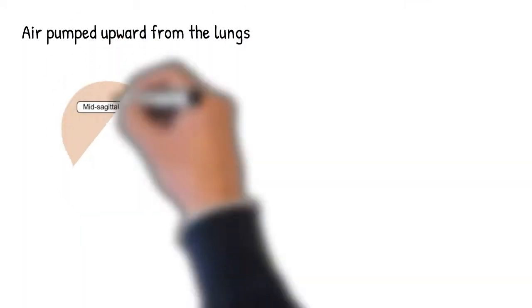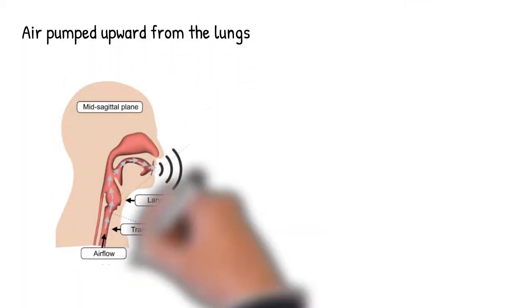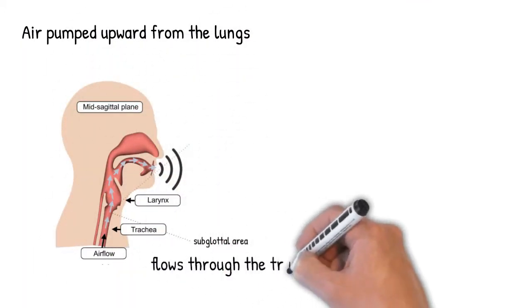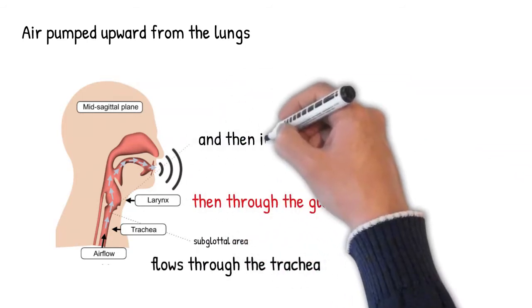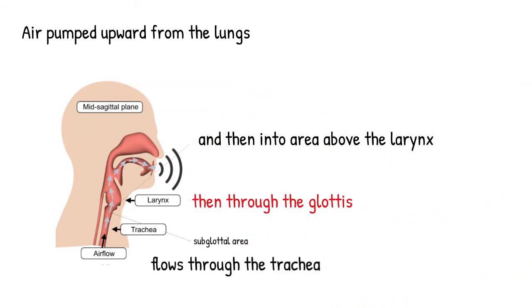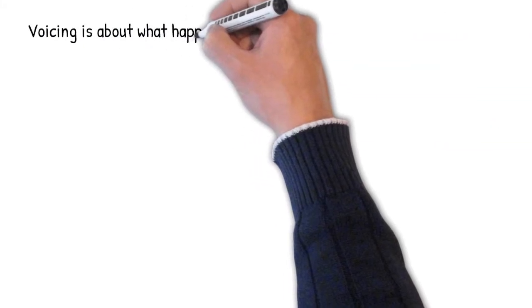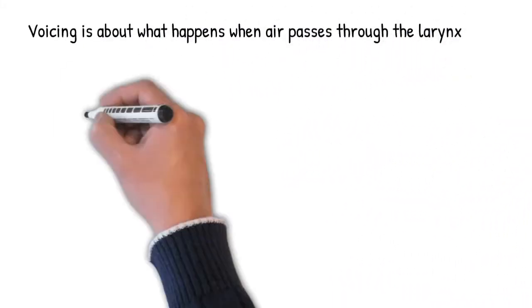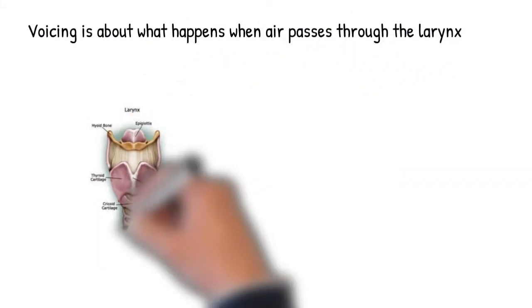During speech production, this air flows upwards through the trachea to the larynx, where it passes through the glottis and up into the supralaryngeal vocal tract. Voicing is all about what happens when the air passes through the larynx.